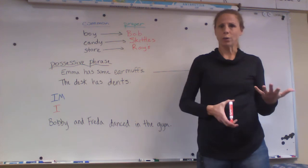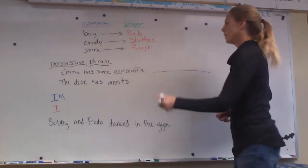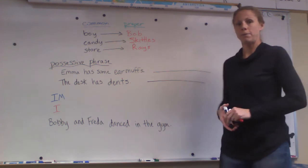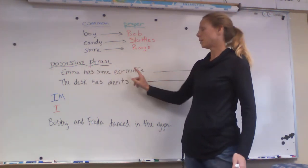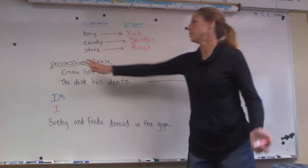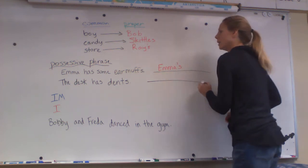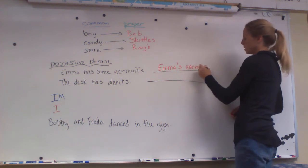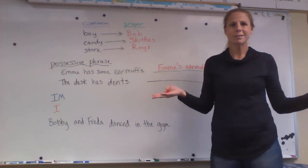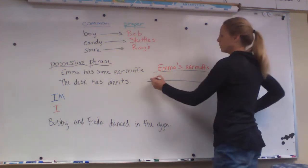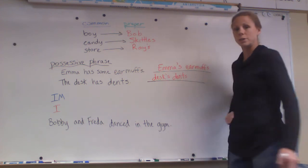Your third phonics sheet for week four has these possessive phrases that it wants you to make. It gives you a sentence, but you just have to make a phrase — you don't have to make a complete sentence. For example, 'Emma has some earmuffs.' They want you to make it possessive. Whose earmuffs? It's Emma's — apostrophe S — showing possession: Emma's earmuffs. Another example: 'The desk has dents.' Whose dents are they? The desk's dents — desk's apostrophe S dents to show possession.